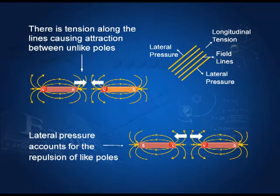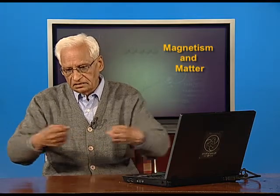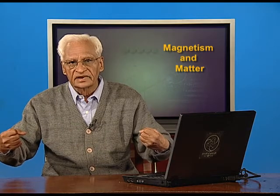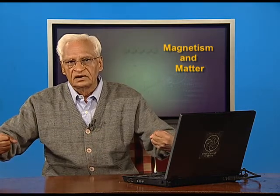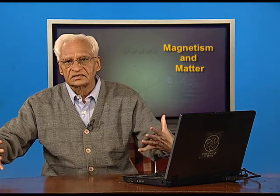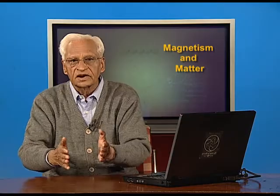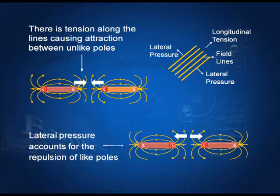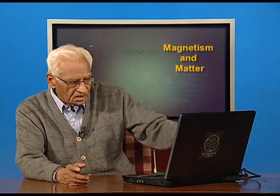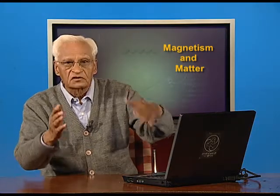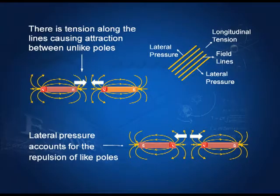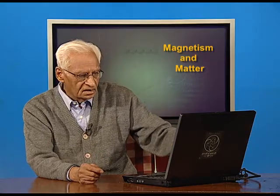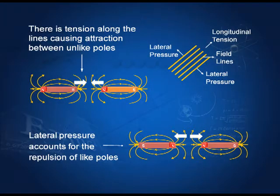There is a tension along the lines of force. The magnetic field lines act like springs: if you stretch a spring and let it go, it contracts. Similarly, field lines tend to contract, and this contraction along the length gives rise to the attraction between two opposite poles. The field lines also have a lateral pressure — a pressure across the lines of force — and this lateral pressure gives rise to the repulsion between similar poles.